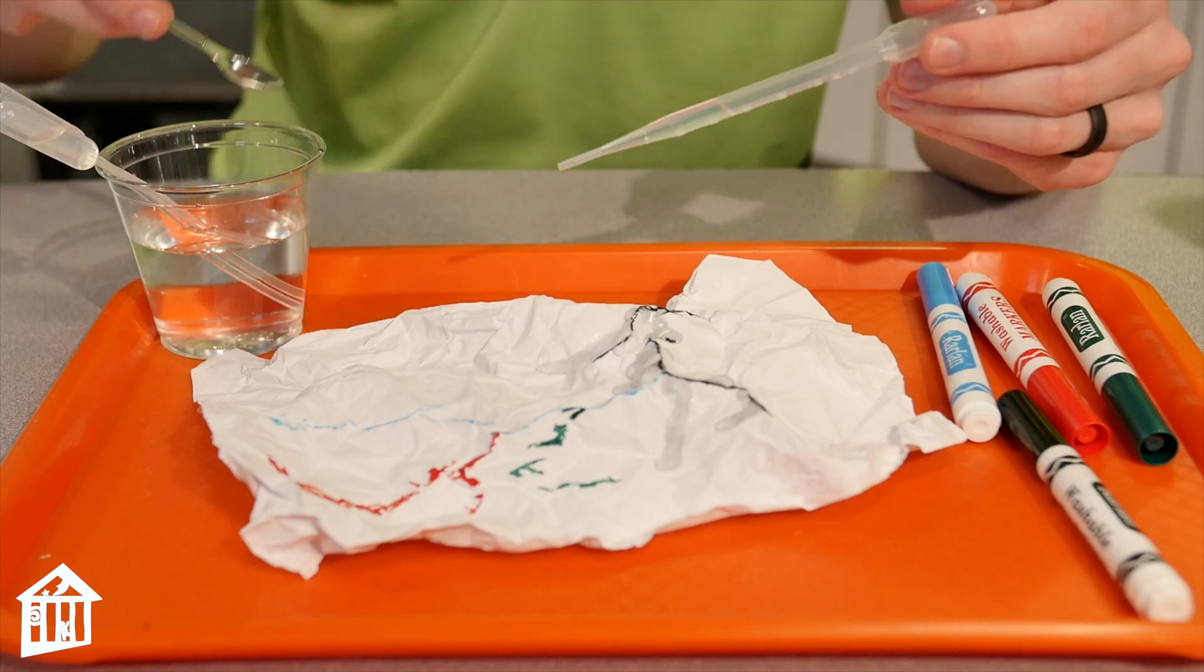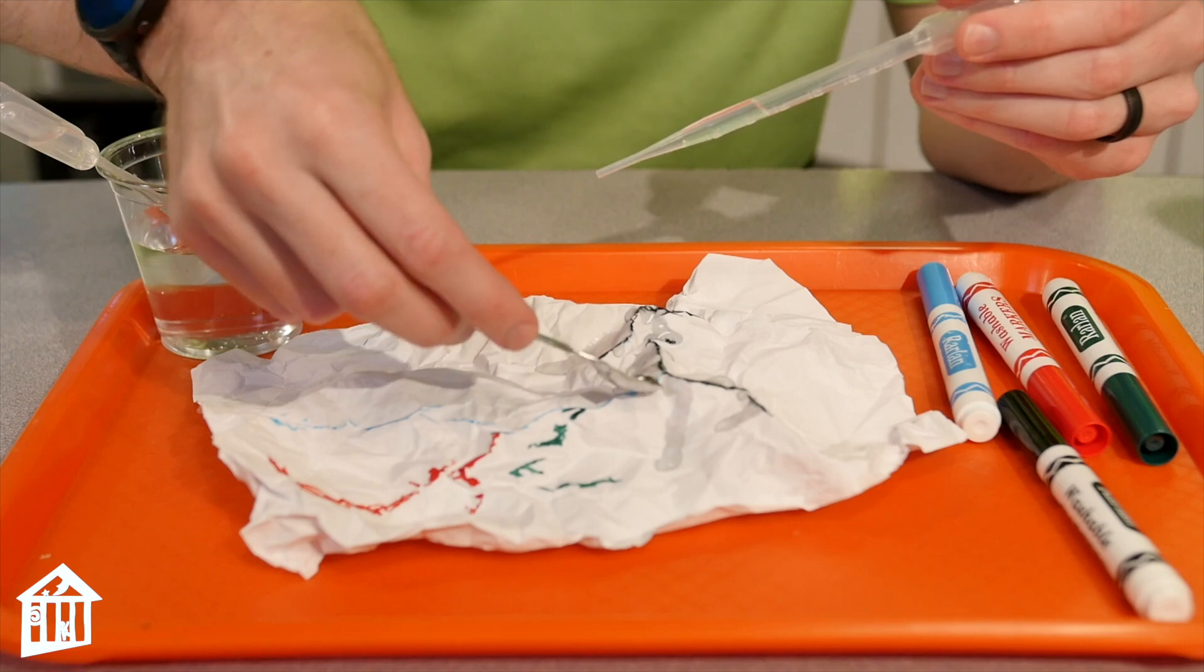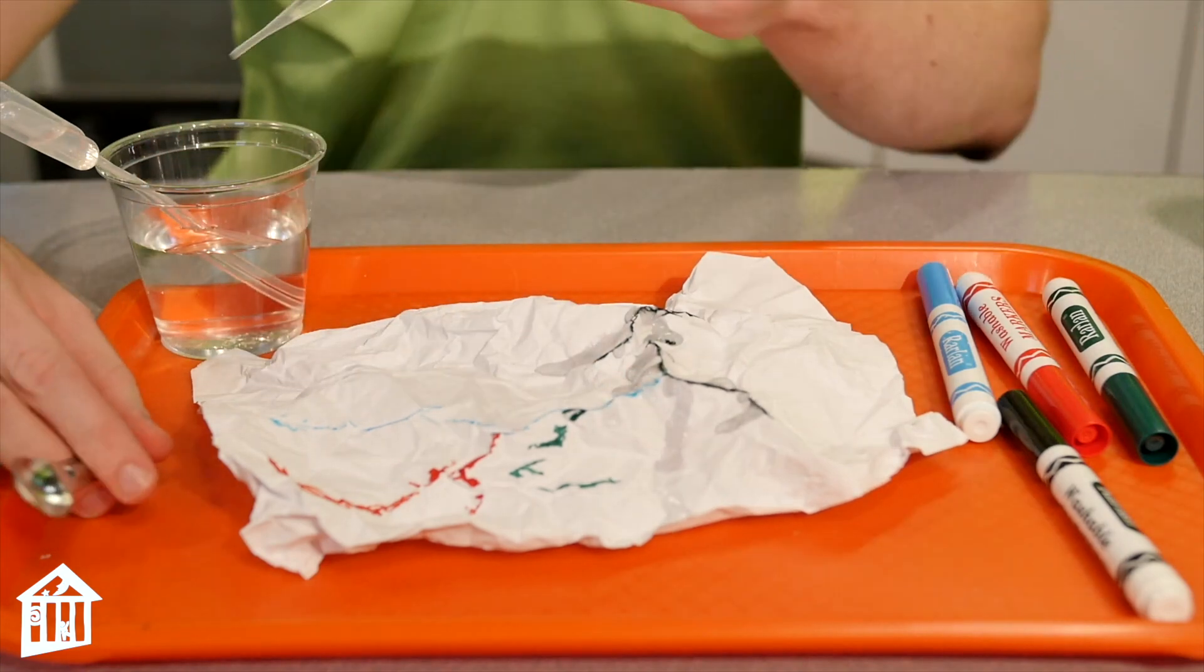And you can watch where the water starts to fall and run. If you're using a little scoop, you can do the same thing. You might just produce a little more of a flash flood than I am with the pipette. But either one will work just as well.